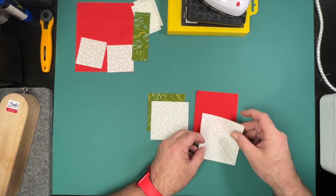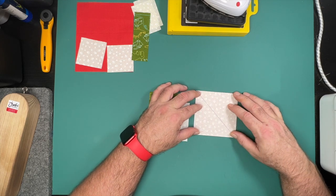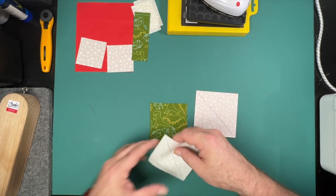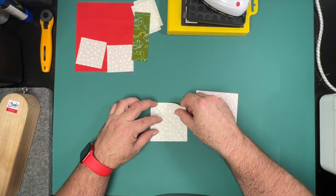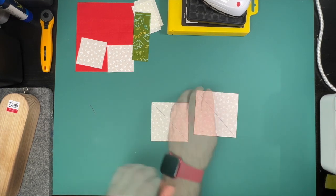To make our half square triangles, we draw a diagonal line from corner to corner in one direction on the back of one piece of our fabric. Then we match that right sides together with our other piece, and we take it to the machine and sew one quarter of an inch on each side of this drawn line.